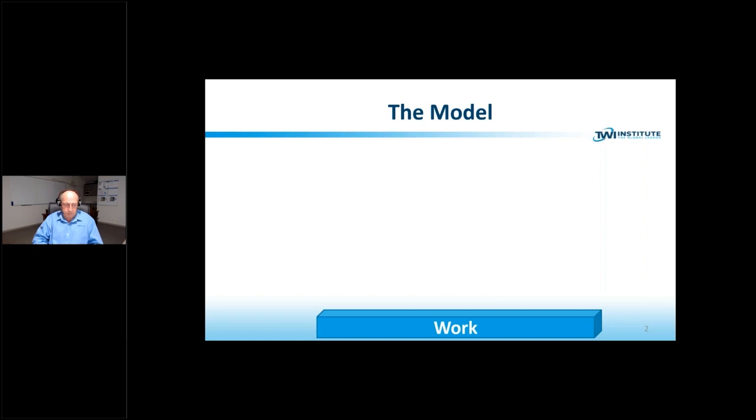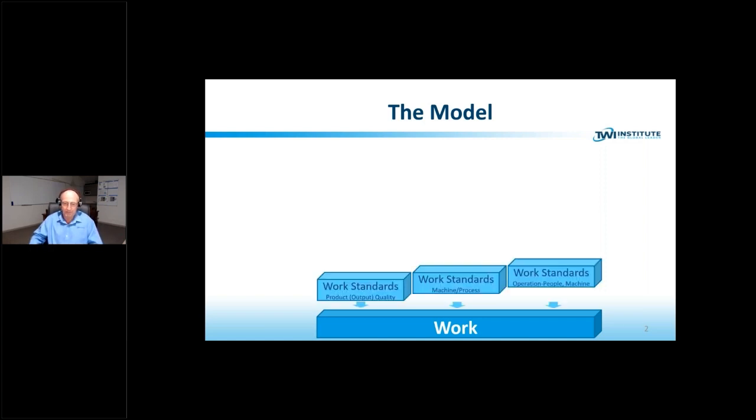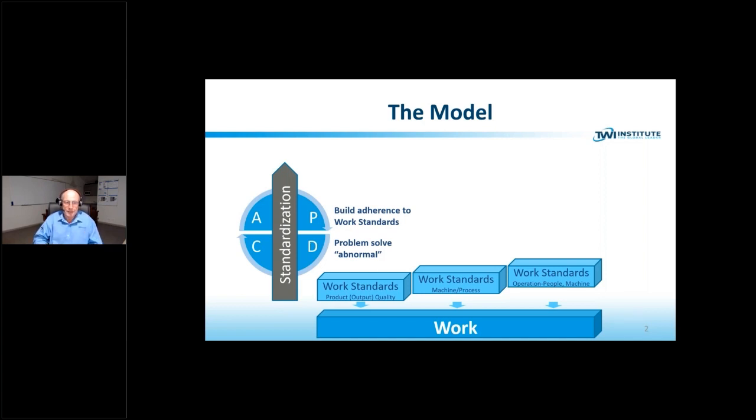Every workplace, regardless of what it does, whether it be a service or manufacturing, has work going on. The first part of the standardisation model is to develop work standards. And the role of a work standard is very simply to show abnormal from normal. So for our work, the first concept within the model is to have what we call work standards, and the role of the work standard is quite simply to show normal from abnormal. And then through standardisation, which in effect is a PDCA cycle, we problem solve abnormal and we build adherence to work standards.